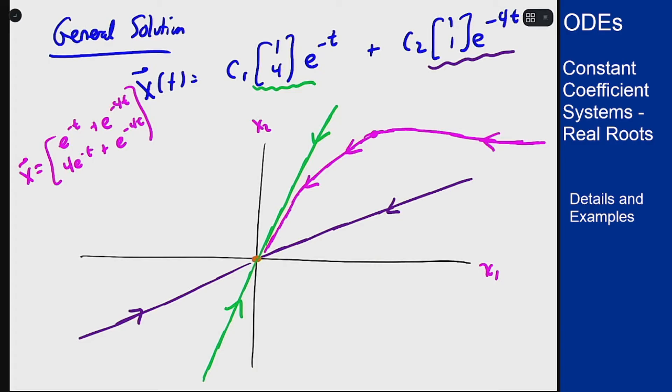The same process happens no matter what I pick for c1 and c2. As t goes to plus infinity I'm going to go towards the origin along this line because that's the term that survives longest. As t goes to minus infinity I'm going to approach this line heading away from the origin. You can fill in a couple more curves here based on that information.